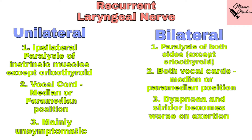The vocal cord assumes a median or paramedian position. This is mainly asymptomatic because the healthy vocal cord compensates — it crosses the midline to meet the paralyzed cord, thus maintaining normal vocal cord function. A patient with only one functional vocal cord can go undetected. There may be some change in voice, but no aspiration or airway obstruction.